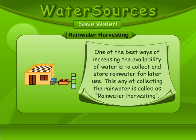Rainwater harvesting. One of the best ways of increasing the availability of water is to collect and store rainwater for later use. This way of collecting rainwater is called rainwater harvesting.